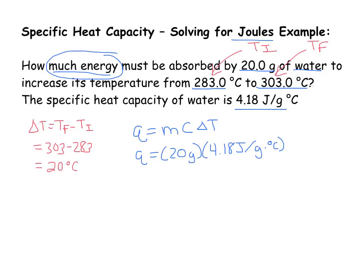So for my delta T over here, I'm going to put in 20 degrees Celsius. Now, just to make sure that we're on the right track here, we know that grams will cancel grams. Degrees Celsius, which is on the bottom here, will cancel degrees Celsius up here. And I'm left with joules as my final unit for my overall answer.